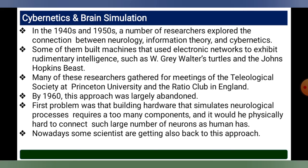In the 1940s and 50s, a number of researchers explored the connection between neurology, information theory, and cybernetics. Some of them built machines that used electronic networks to exhibit rudimentary intelligence, such as W. Grey Walter. Many researchers gathered at meetings of the Teleological Society at Princeton University and the Ratio Club in England. A first challenge was that building hardware to simulate neurological processes requires too many components and is physically hard to connect as many neurons as a human has. Nowadays, some scientists are returning to this approach.